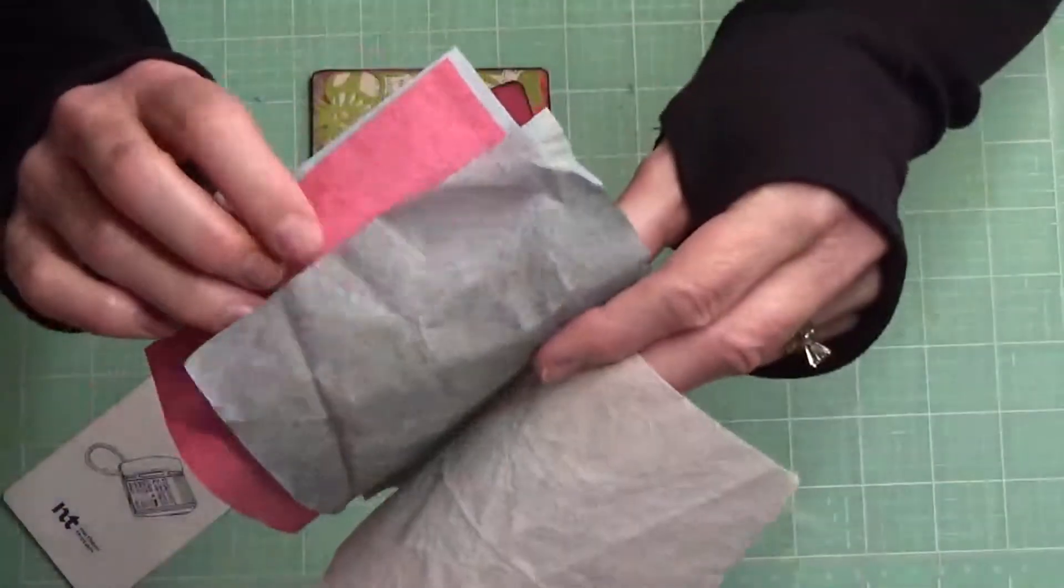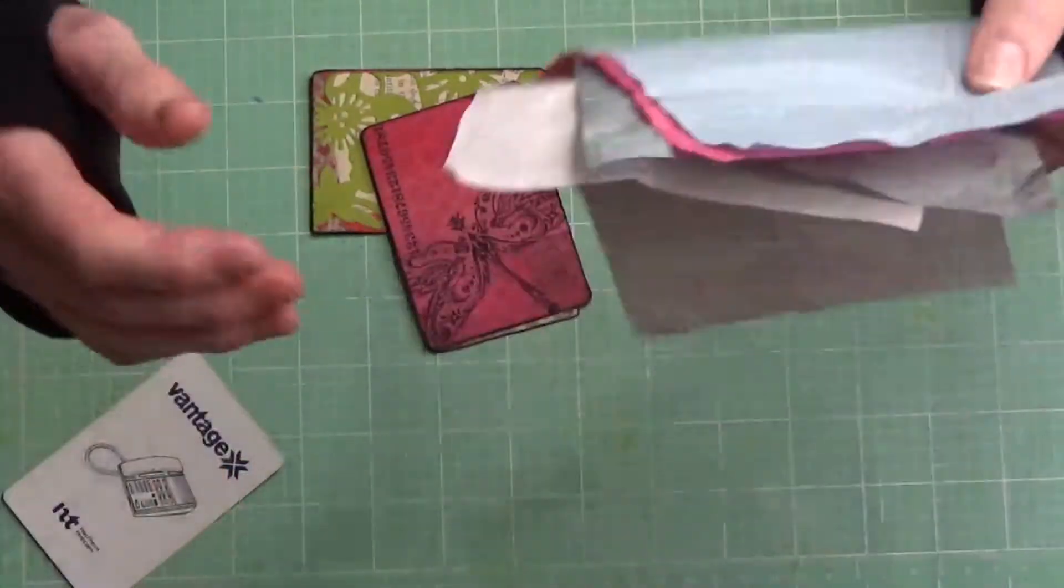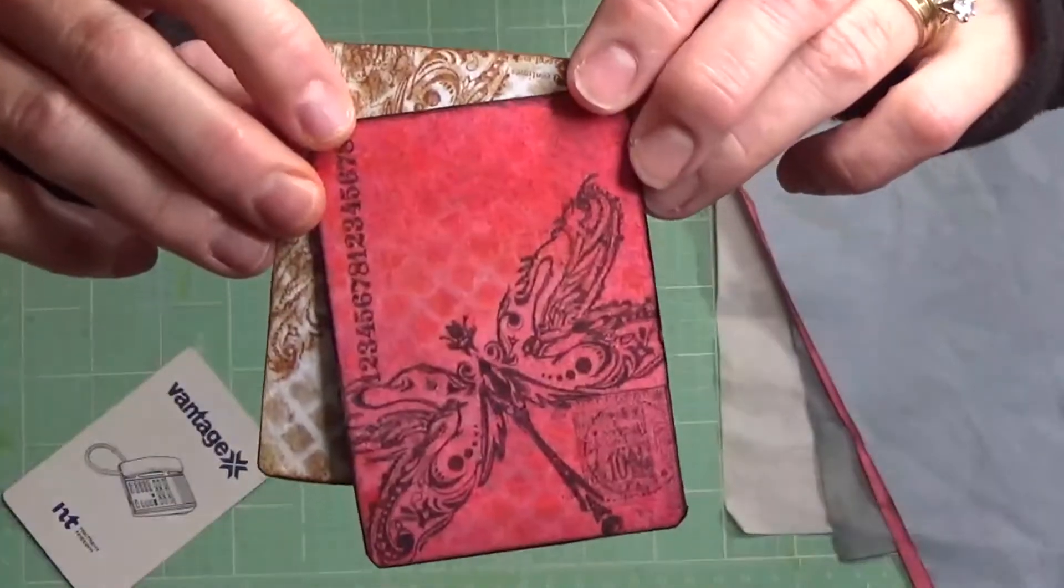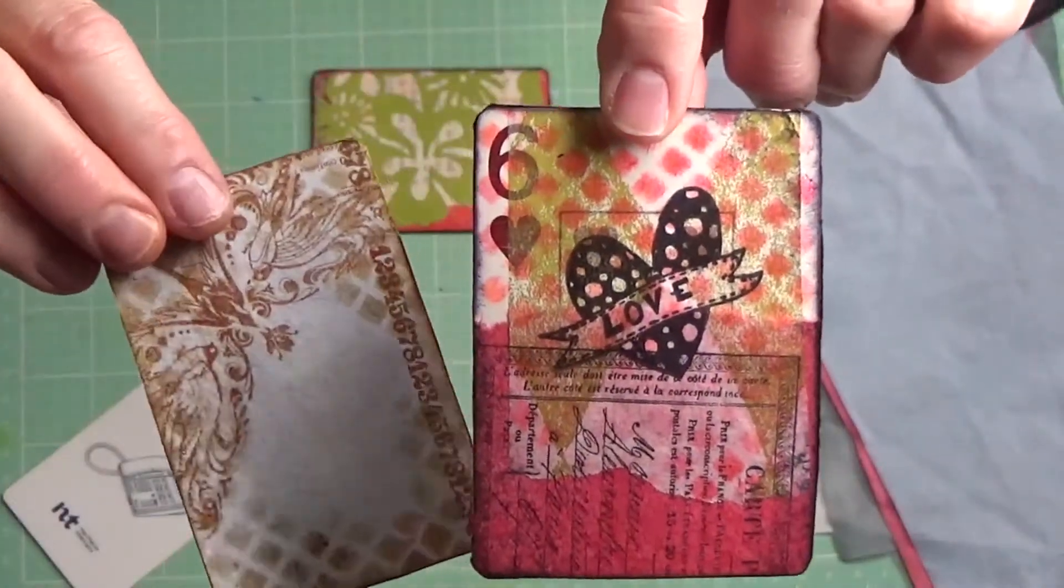These are color catchers. They're a laundry item. They're pretty great. They absorb different dyes that come off your clothes in the wash. And then I've stenciled on them and stamped on them and added different embellishments to these.